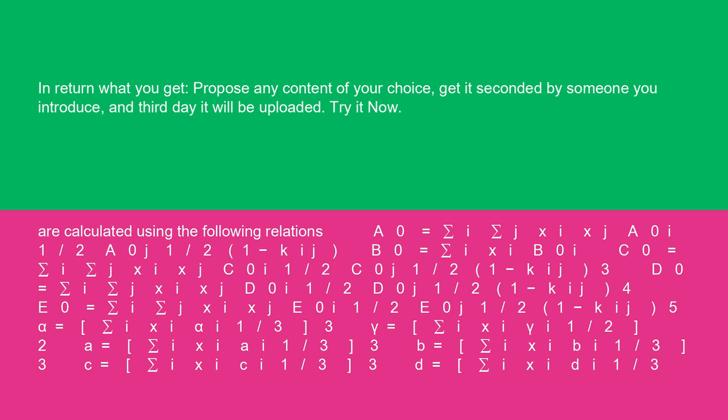E0 equals sum over i,j of xi xj E0(ij)^(1/2) (1-kij)^5; and similar summation relations for the remaining mixture parameters.